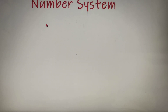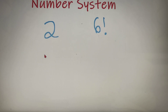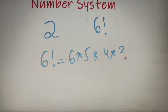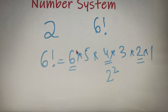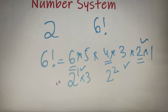Suppose I tell you to find the highest power of 2 in 6 factorial. Since 6 factorial is small, I can write it as 6 × 5 × 4 × 3 × 2 × 1. I can see there is one 2 in the factor 2, two 2s in the factor 4 (since 4 = 2²), and one 2 in the factor 6 (since 6 = 2 × 3). So in total I have 1 + 2 + 1 = 4, meaning the highest power of 2 in 6 factorial is 4.